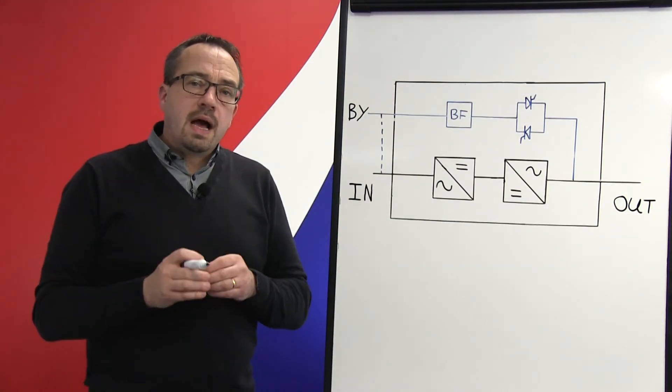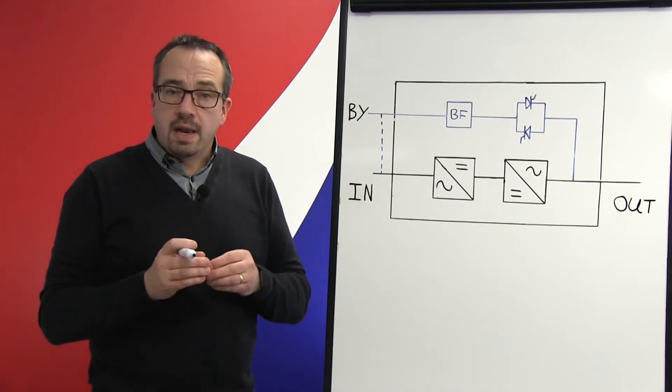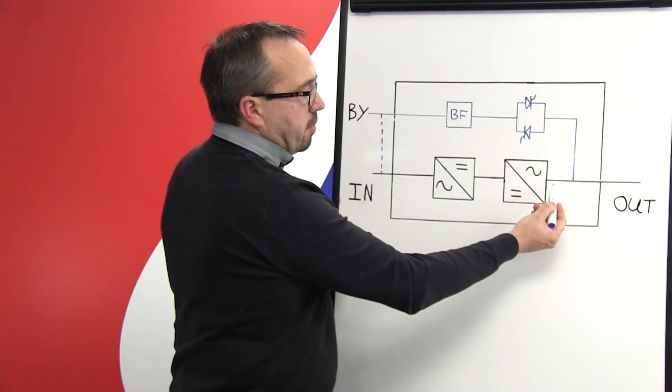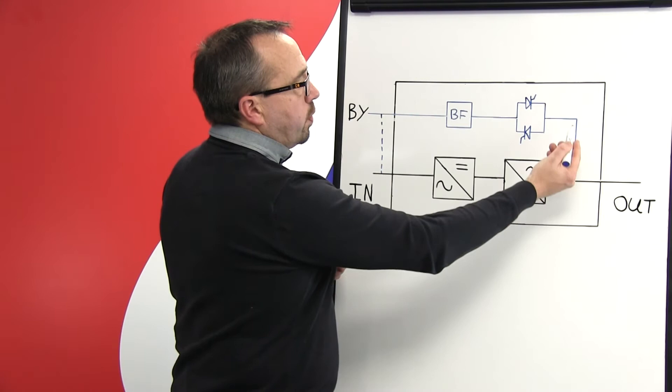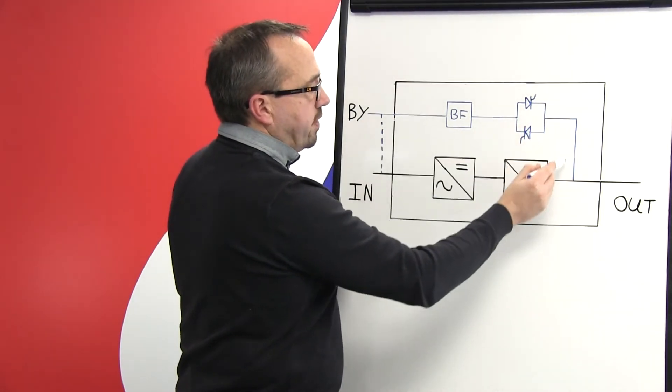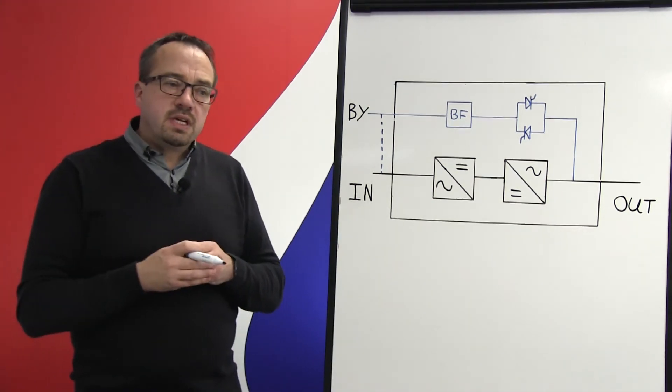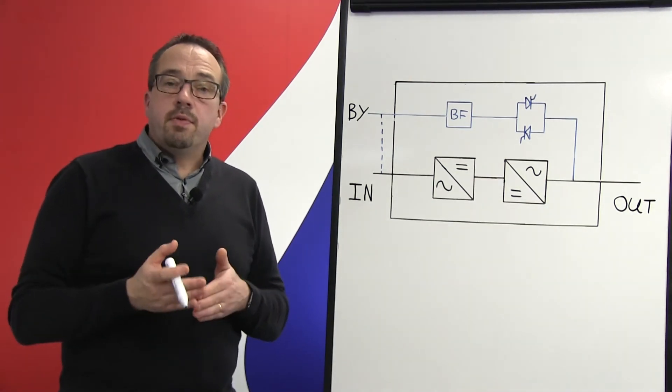One of the main things that must happen within any UPS system to allow a zero break transfer is that the output voltage waveform from our inverter must always be in synchronization with the supply voltage waveform coming in via our bypass switch. If that's not in sync, the UPS can never make a seamless transfer.